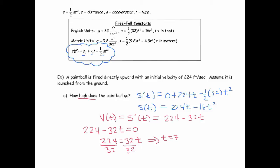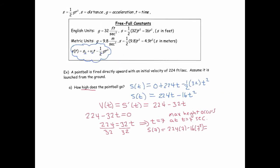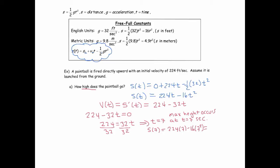All right, so it says how high does the paintball go? We just found the time at which the paintball is highest. So the max height occurs at t equals 7 seconds. And the actual maximum height is going to be the output of the position function at 7. So s(7) equals 224 times 7 minus 16 times 7 squared, which ends up giving us a final height of 784 feet.